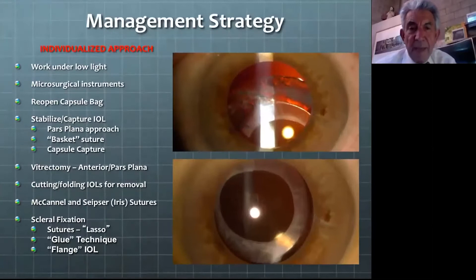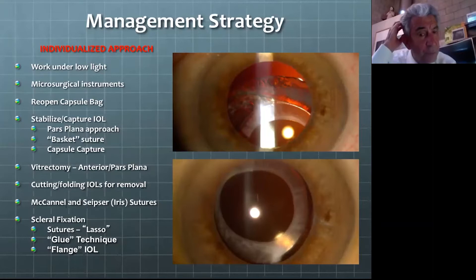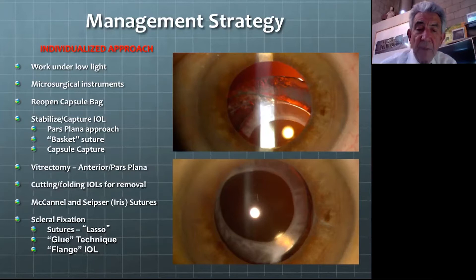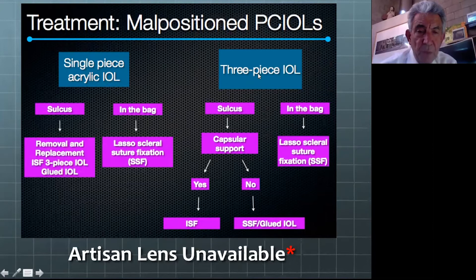Regarding management strategy: we take an individualized approach to all eyes, working under the least amount of light possible to avoid photocernaculopathy. Microsurgical instruments are helpful. Skills we need include the ability to reopen the capsule bag, stabilize and capture the IOL either through pars plana or anteriorly, perform vitrectomy, remove lenses by cutting and folding, and fixate IOLs to the capsule bag or sclera. In our treatment algorithm, a single-piece acrylic in the ciliary sulcus is a no-no — it must always be removed, as it can cause UGH syndrome due to the thick, abrasive haptic.